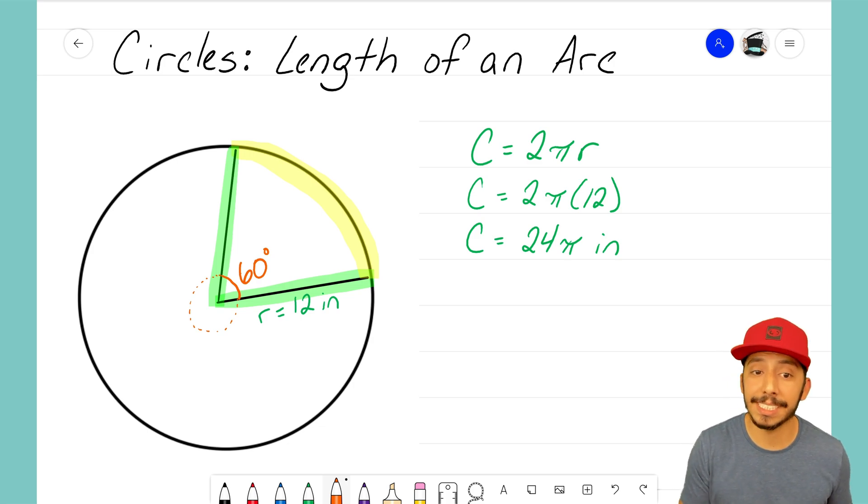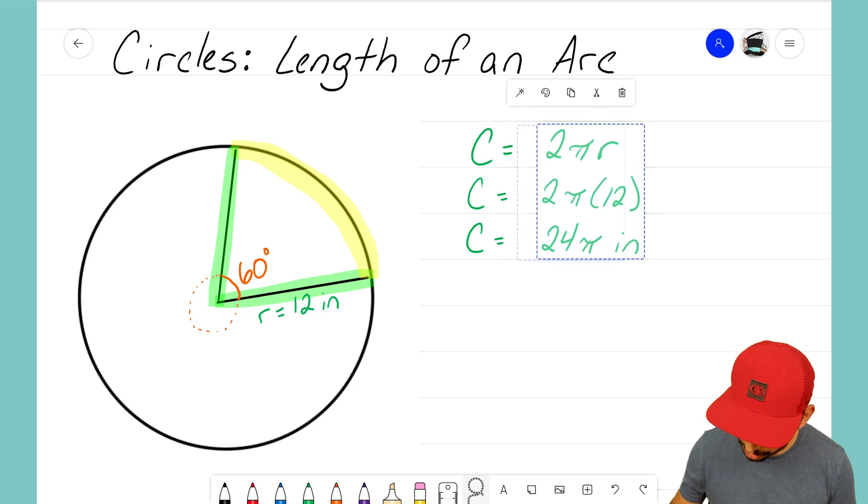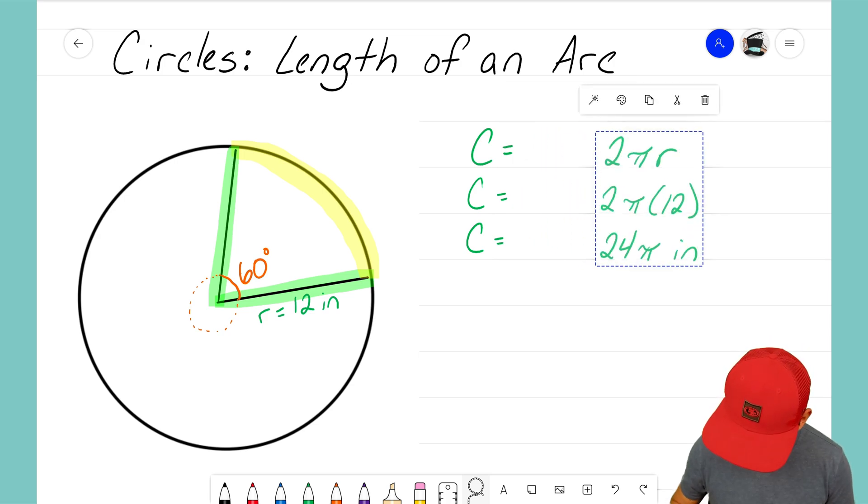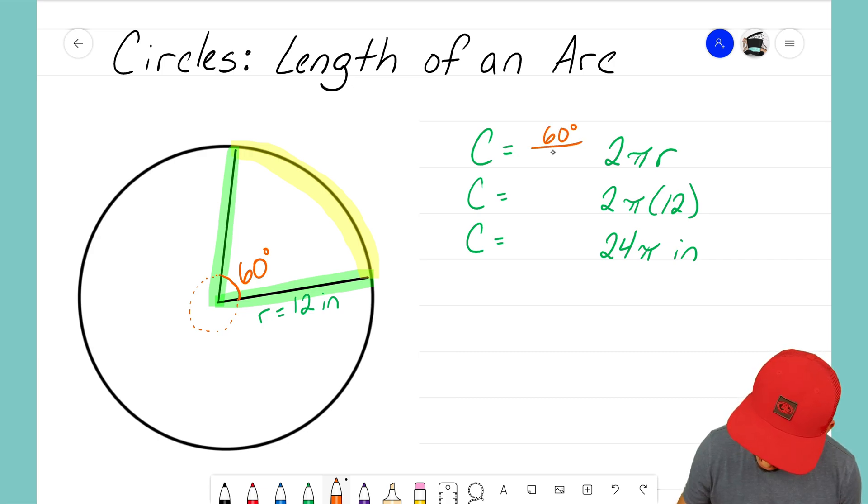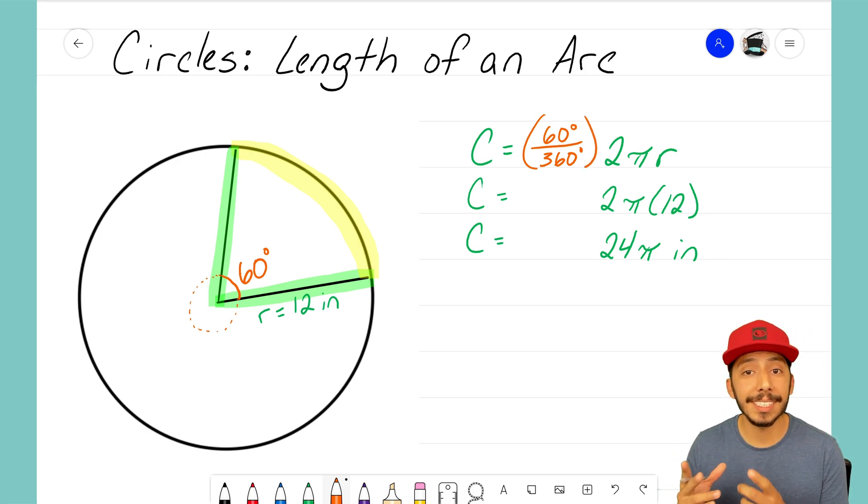That's the portion of this arc that I care about. So since I know the total circumference, what I actually have to do with this formula is I need to adjust it. I need to adjust it because I don't care about the total circumference. Instead, what I care about is 60 degrees out of the total 360-degree circle. That's what we want to do to adjust this so we can find the length of that arc.